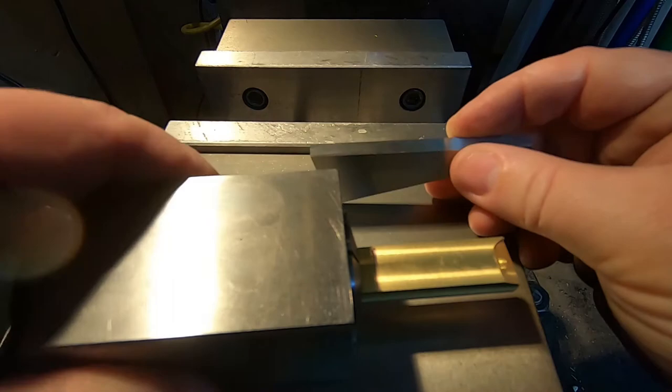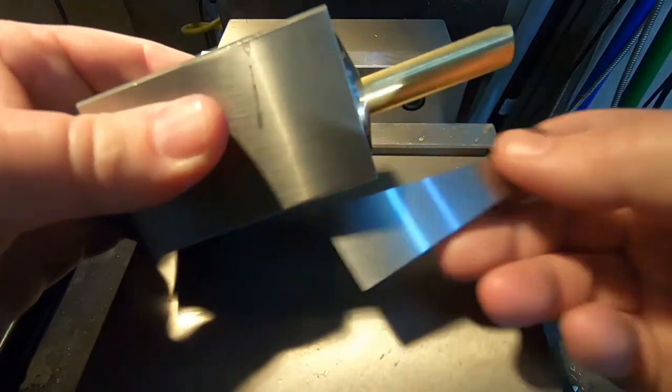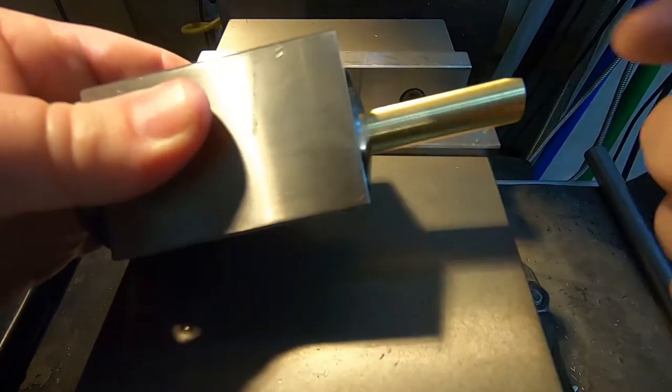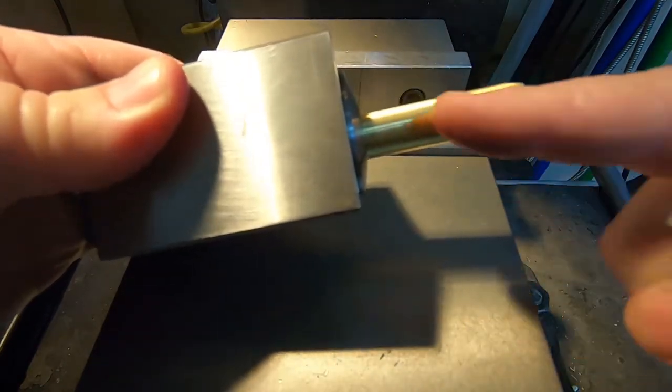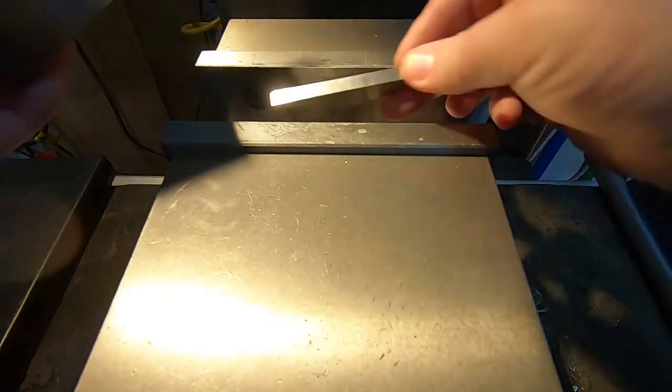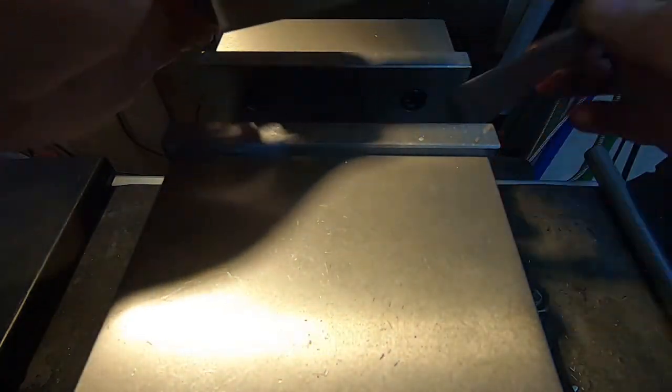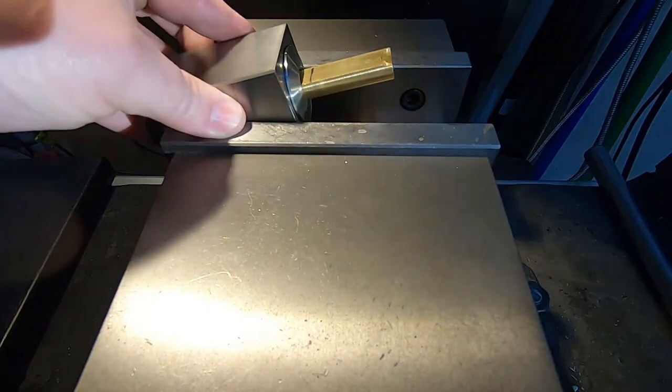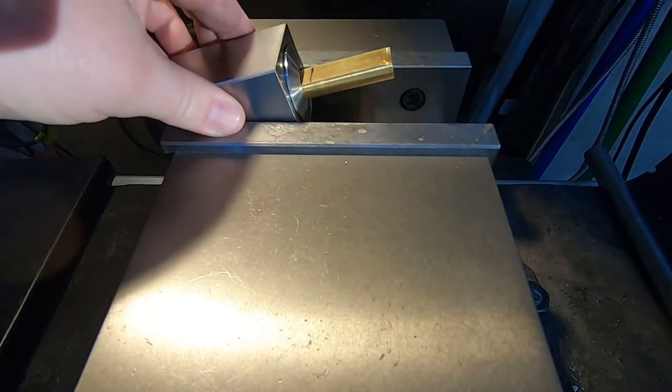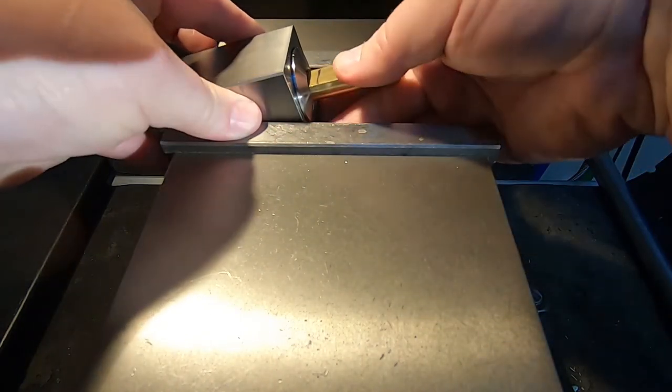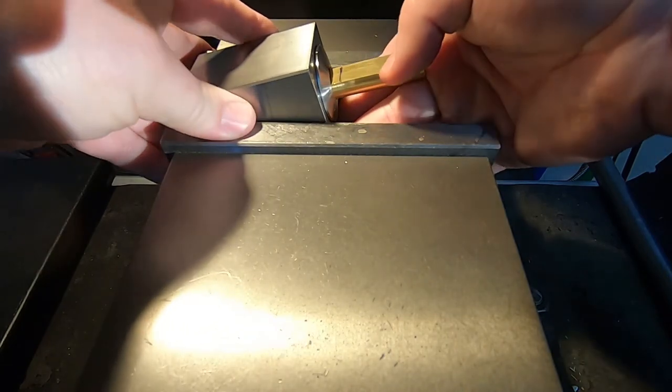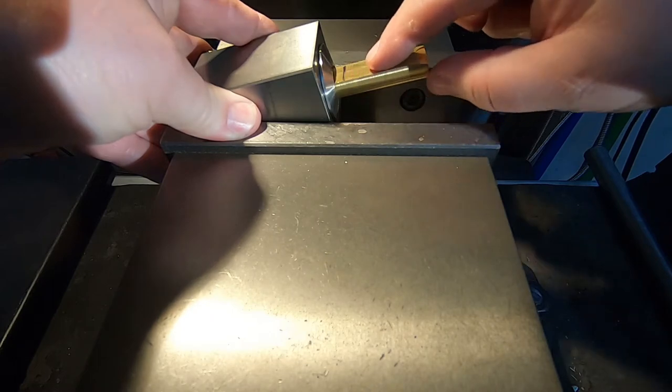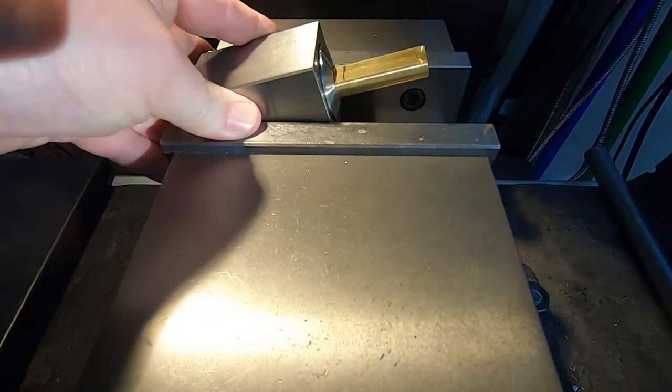I'm just going to use this angle block to prop it up. It was 15 degrees, something like that. Yeah, 15 degrees. That'll give me the cut profile that I want. Just have to make sure that it doesn't - that the furthest in isn't below the level of the jaws.